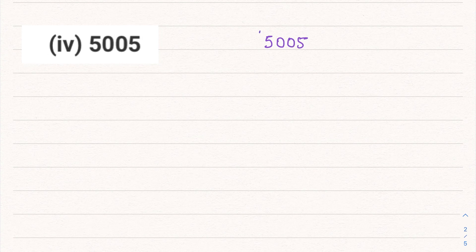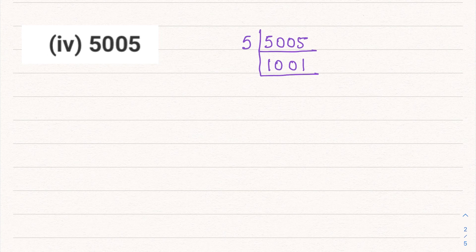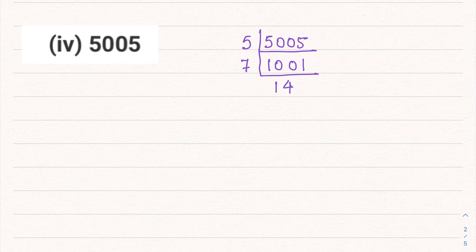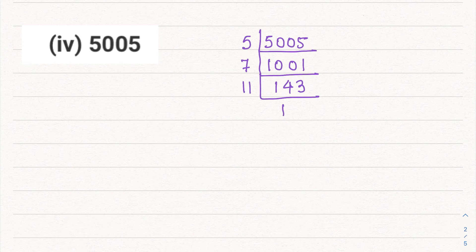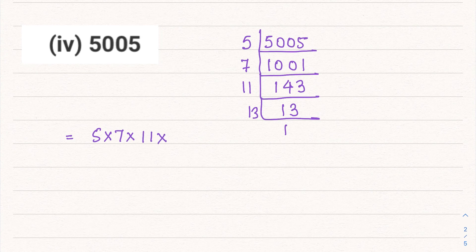Fourth part is 5005. This definitely comes in the table of 5: 5005 ÷ 5 = 1001. Next, 1001 is divisible by 7: 7 × 143. Then 143 = 11 × 13. So the prime factors of 5005 are 5 × 7 × 11 × 13.